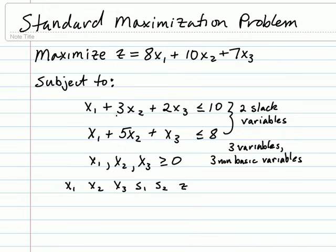Now our first row will be our first constraint, where we will add a slack variable to pick up the slack. Therefore we get 1, 3, 2 for x₁, x₂, x₃, and s₁ equals 1. The first constraint won't have an s₂ or a z value, but it does have the constant 10.